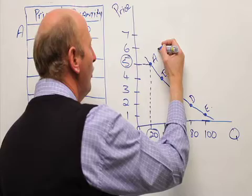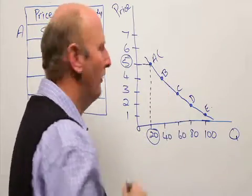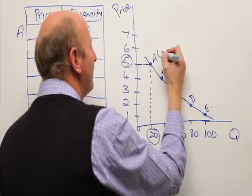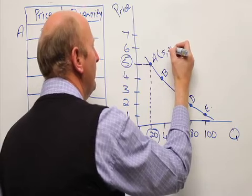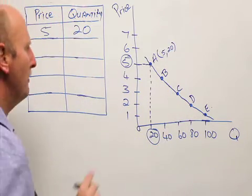So at point A, the coordinates, in other words, the x and y values, are 5 grand and 20 units. Similarly,